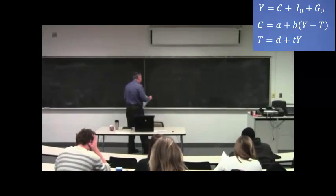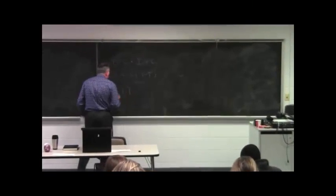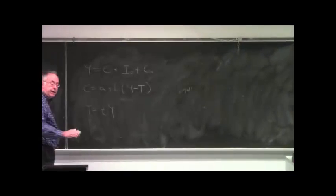And you have this tax equation where tax revenue collected, capital T, is just proportional to income. And you are given the following information about the parameters.